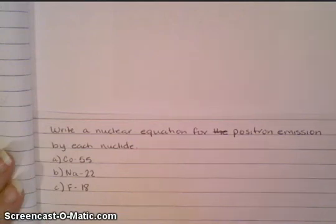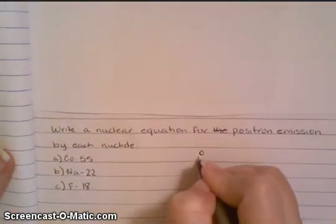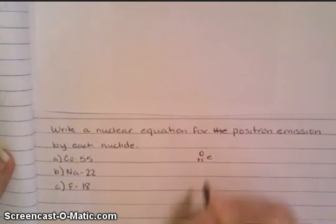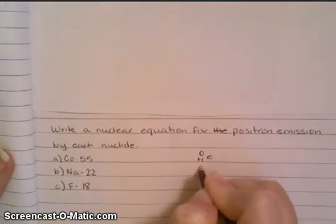Today we want to look at how to solve a positron emission problem for nuclear equations. When we think of the positron emission, remember that we're going to use the symbol 0 plus 1e. So I can go ahead and write that in for each one.